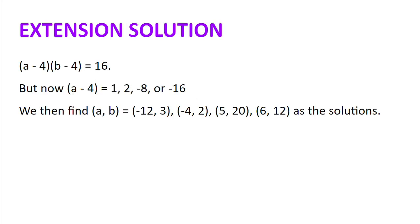The solution: a minus 4 multiplied by b minus 4 is 16 as previously. But now a minus 4 can equal 1, 2, minus 8, or minus 16. We then find (a, b) equals (-12, 3), (-4, 2), (5, 20), or (6, 12).